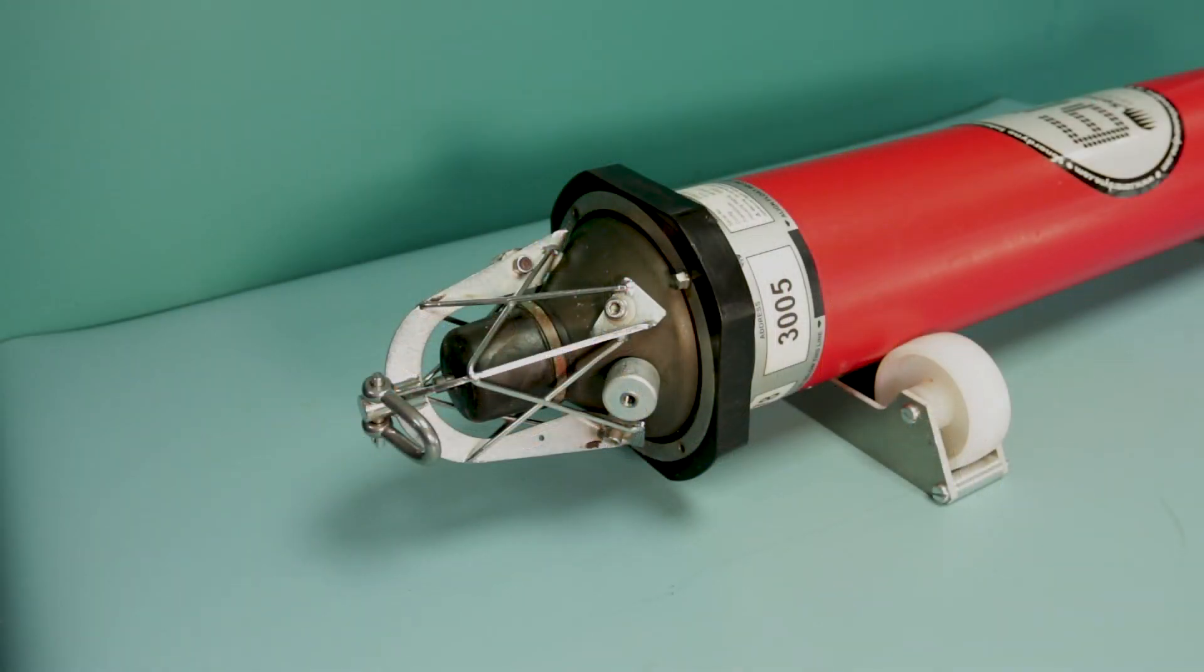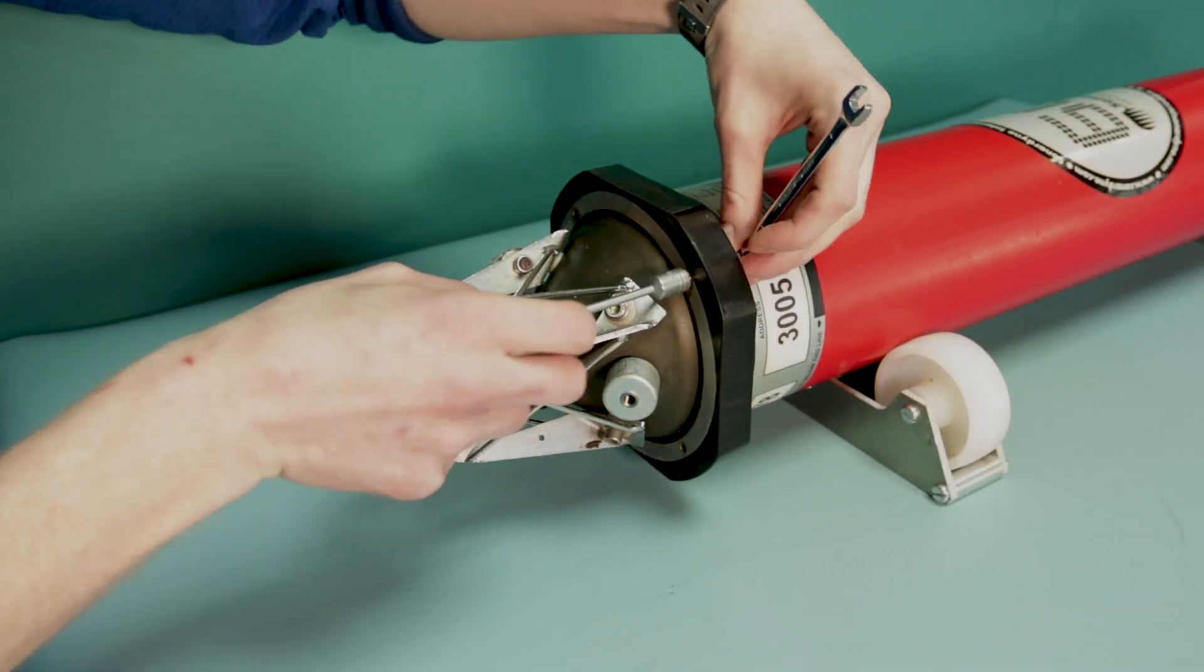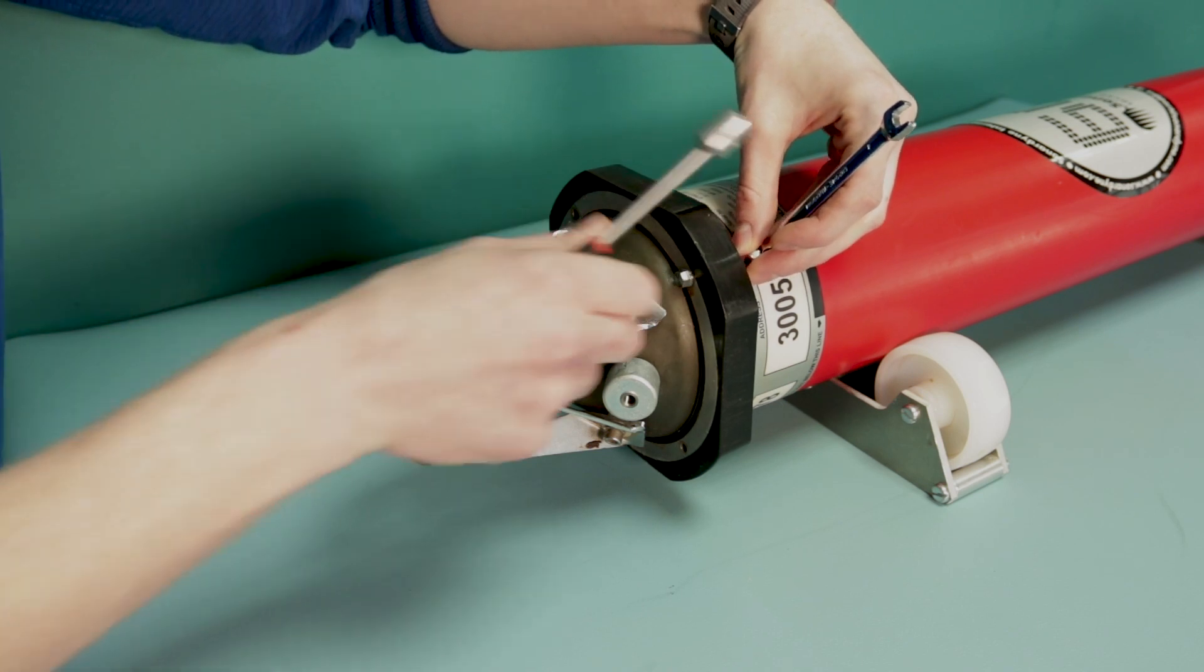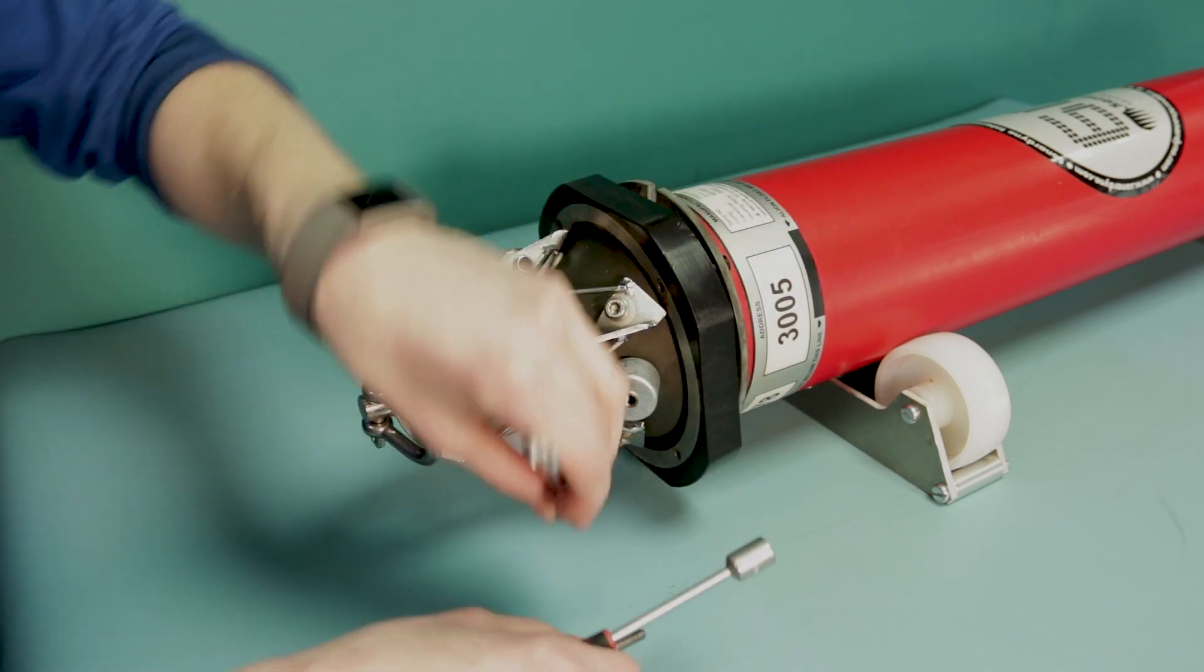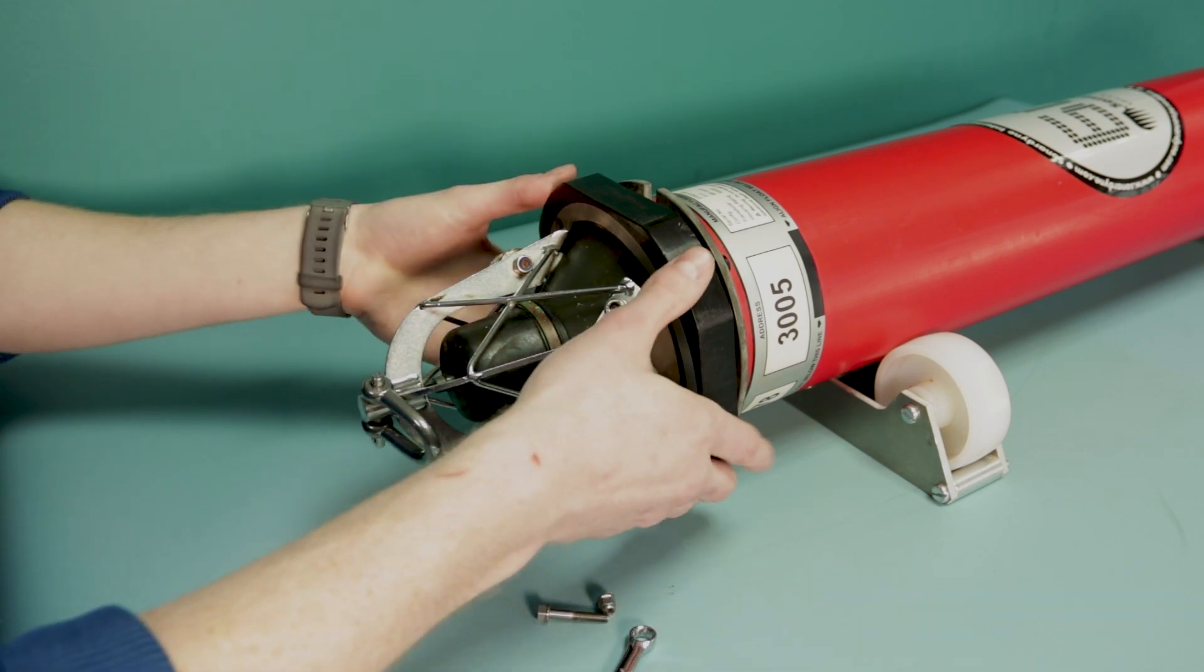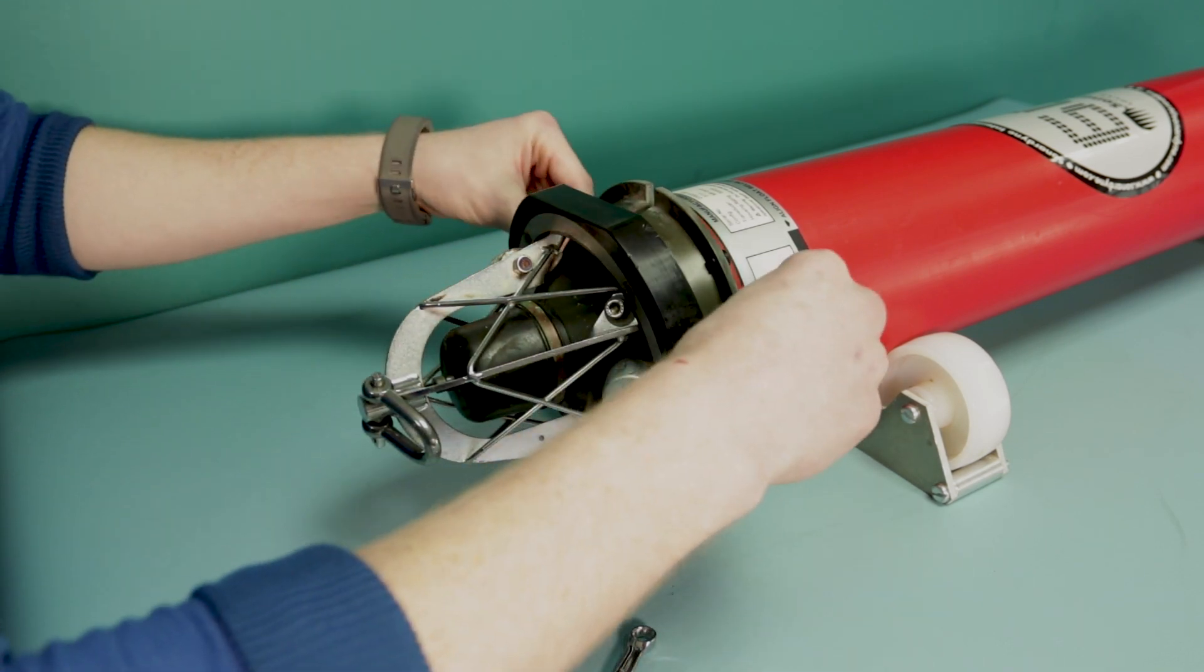On the transducer end cap, undo and remove the bolts and washers that hold the clamp ring in place. Push free the rubber bumper and remove the clamp rings from the housing.